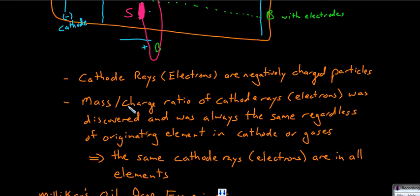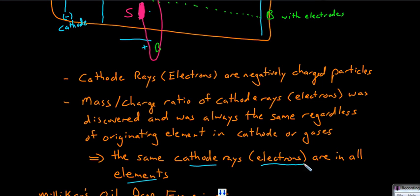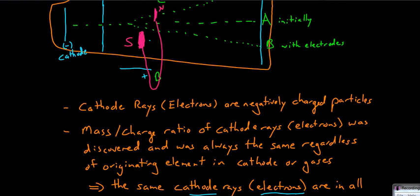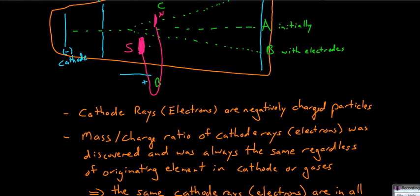These cathode rays always have the same mass-to-charge ratio, which was determined by balancing the strength of the electrodes versus the strength of the magnets, with mass measurements done later on. These cathode rays are the same coming from all elements — they must be in all elements. Later, it was said that these cathode rays could just be called electrons: negatively charged electrons. So this was the discovery of electrons, showing they were negatively charged, present in all elements, and have the same mass-to-charge ratio.